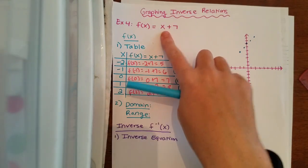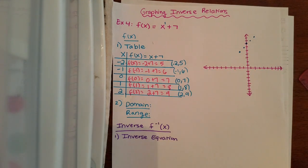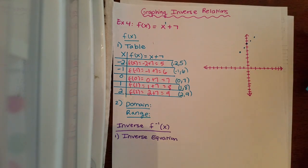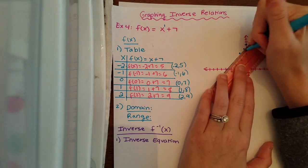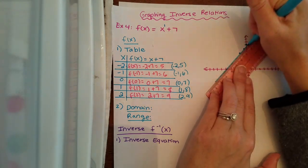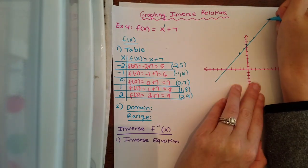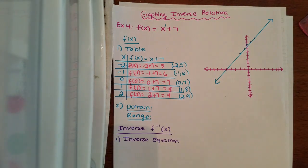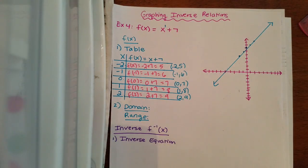Since this equation is technically to the first power — remember, if you don't see an exponent, it's technically one — that means it's a linear function. So if done correctly it should form a straight line. When I connect all these dots, my line will look like this. Since this is a function, I put arrows on the ends because x could be anything and it keeps going forever.